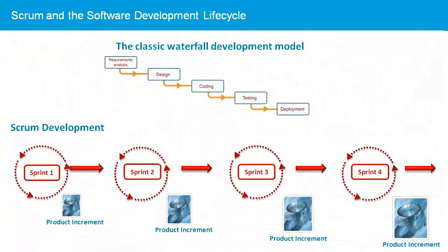The software development lifecycle includes analysis and planning, design, development, test, and deployment. In the waterfall process, each step is done to completion before the next step is started. However, this means all the requirements must be determined at the beginning of the project, when the least is known. And the customer does not see the product until the end of the project, running the risk that what was built was not what the customer wanted.